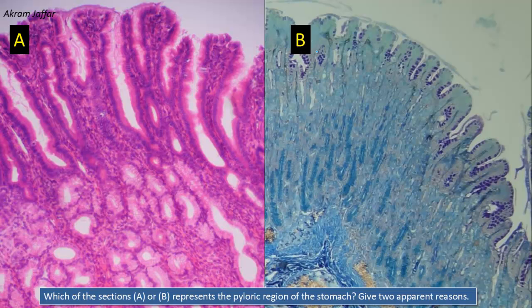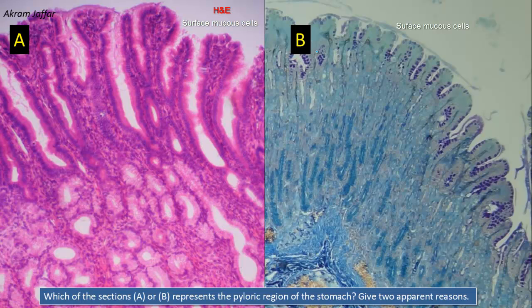Which of the sections A or B represents the pyloric region of the stomach? Give two apparent reasons. Both sections show the characteristic features of the stomach. There are surface mucus cells. The ones in section A appear to have an empty cytoplasm because they are stained with hematoxylin and eosin, which doesn't stain the mucus. Cells in B are shown to have a dark magenta color because the stain contains periodic acid-Schiff, which specifically stains complex carbohydrates including the mucins.